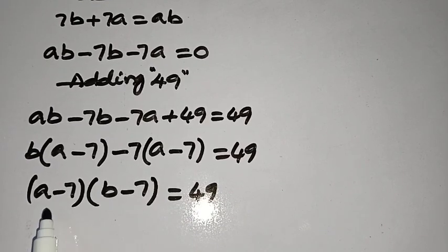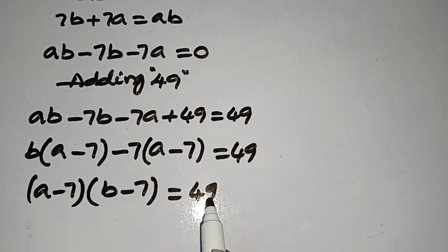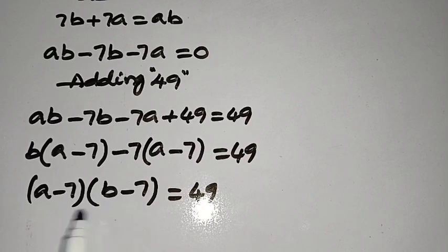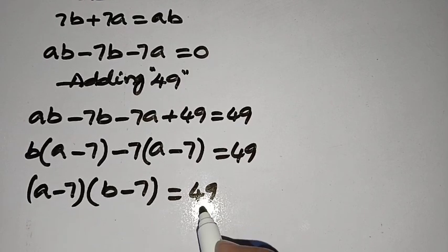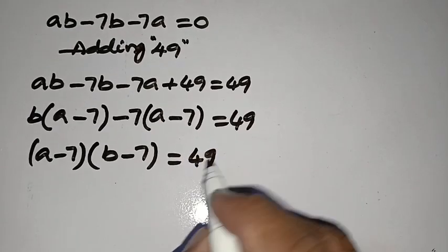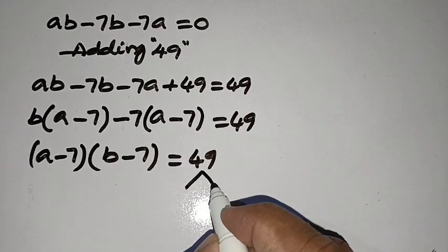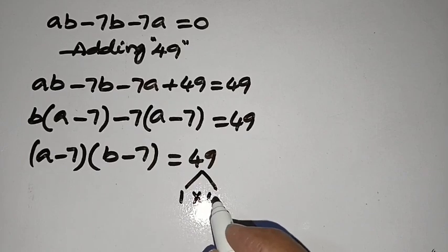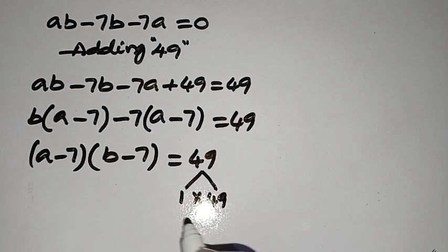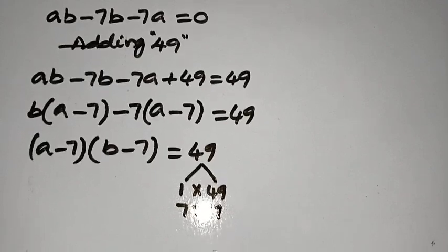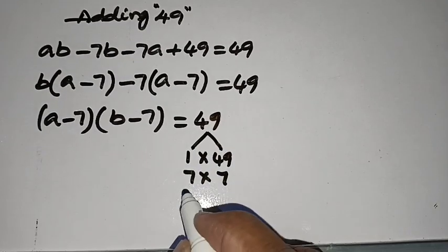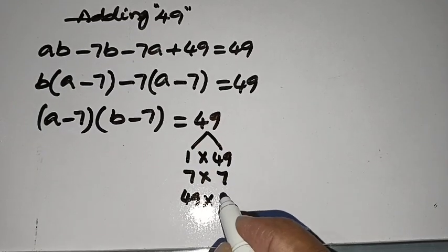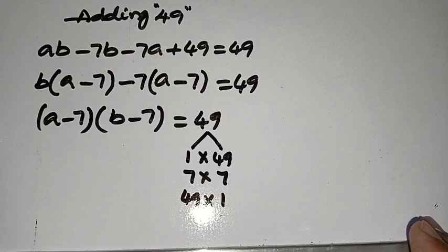Since A and B are natural numbers, the product of two natural numbers is 49. This is possible only if we have 1 times 49, or 7 times 7, or 49 times 1. These are the only possibilities.